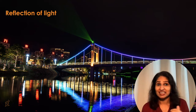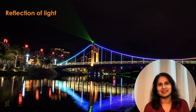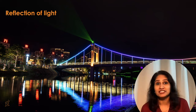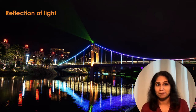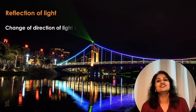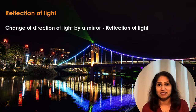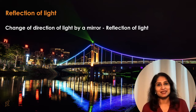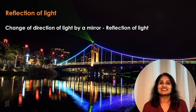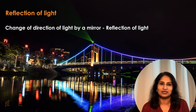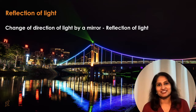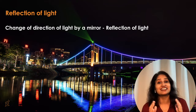In your previous classes you might have learned that we can change the direction of light by a mirror. This change of direction of light by a mirror is called reflection of light. A water surface can act as a mirror and reflect light; this is the reason we can see the reflection of trees and even our faces in water. Let's do some activities to learn more about the reflection of light.